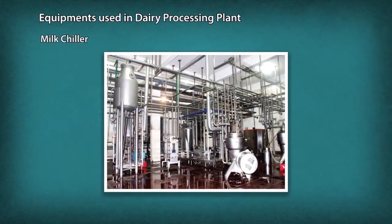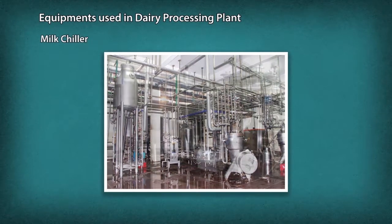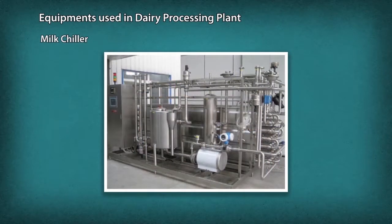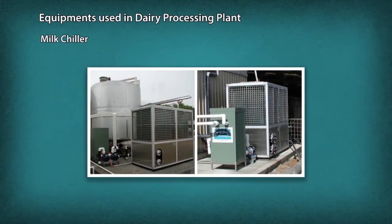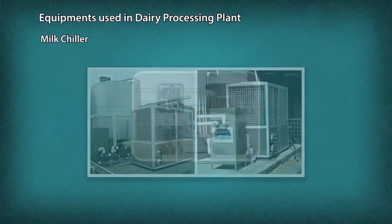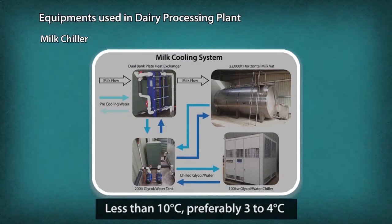Milk Chiller: Chilling of milk is the rapid cooling of raw milk to a sufficiently low temperature to check the growth of microorganisms present. In the chilling process, the temperature of milk should be reduced to less than 10 degrees Celsius.